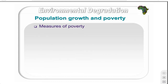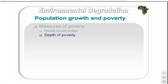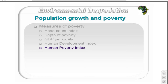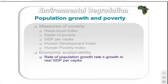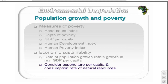Measures of poverty are used to determine the state of the poor and the extent of poverty and development. Several measures exist: the Headcount Index, Depth of Poverty, GDP per capita, Human Development Index, and Human Poverty Index. Economic sustainability assumes that as long as the rate of population growth remains at least equal to the growth in real GDP per capita, a country will remain in its current economic state. However, the rate of growth in expenditure per capita and consumption of natural resources will also determine sustainability and the degree of degradation.